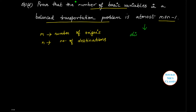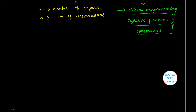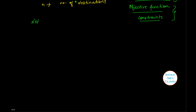Before we start, we should know that this particular problem deals with linear programming. Any linear programming problem must have first an objective function — which can be minimization or maximization — and given the objective function, there should be constraints. Since this question comes under the purview of linear programming, the solution must involve these two particular things.